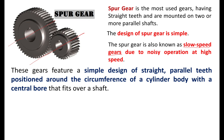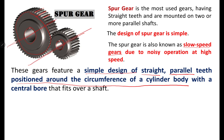Spur gear features: simple design of straight parallel teeth positioned around the circumference of a cylinder body with a centre bore that fits over the shaft. The teeth are straight and parallel, positioned around the circumference of the cylinder body, and the centre bore fits over the shaft on which the gear is mounted.